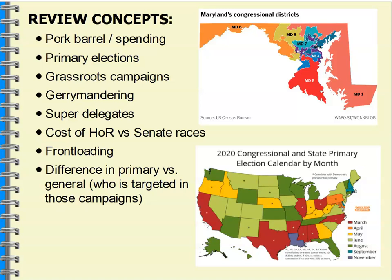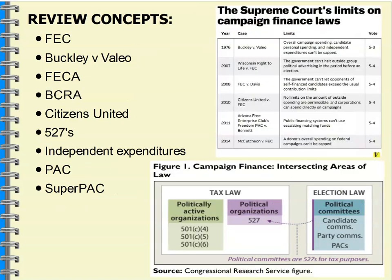Primary versus general: a primary is usually held between January and July — races within the parties, state by state, to determine who their general election candidate will be. The general election is then that candidate who won the primary running against the other party's candidates. Very different in terms of who's targeted, which is why we distinguish between the two.